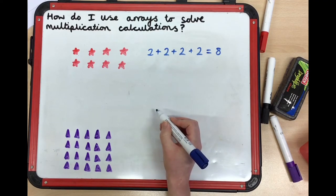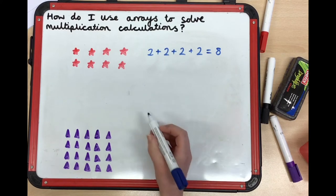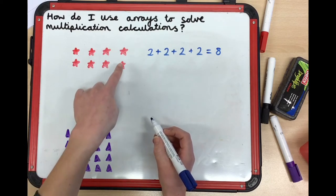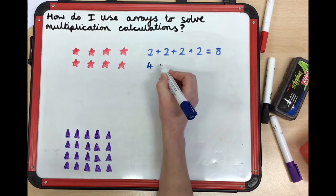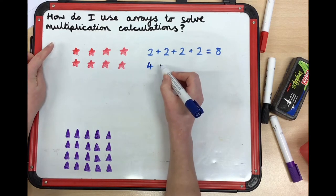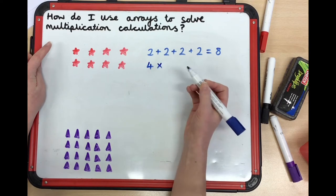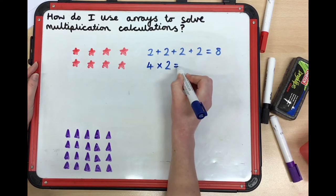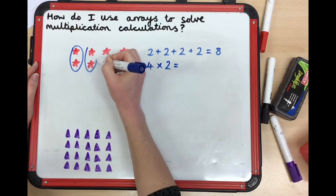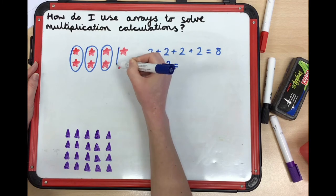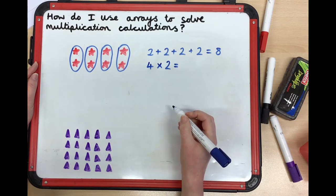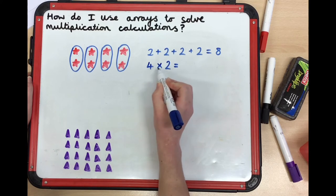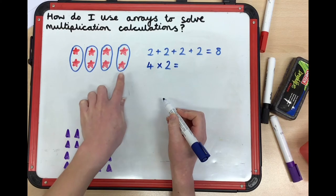I'm now going to have a go at writing the multiplication calculation for this array. I have one, two, three, four groups, and I'm going to write my times sign. I could say four times two, or four lots of two. So that's one lot of two, two lots of two, three lots of two, four lots of two — four groups of two. Four lots of two, four times two, or four groups of two equals two, four, six, eight.